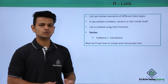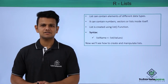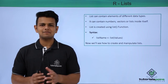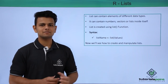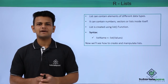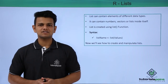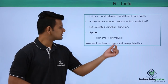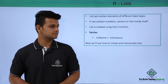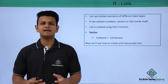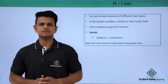The syntax to create a list is: first we write the name of the list followed by the leftward assignment operator, i.e., a smaller-than symbol followed by a hyphen, followed by the list function, and inside the function brackets we write the values that we want our list to have. Now we will see how to create and manipulate lists in R.